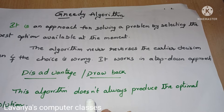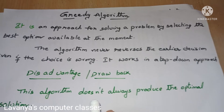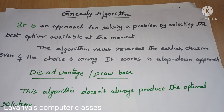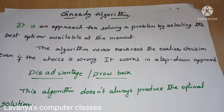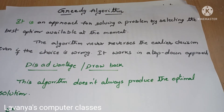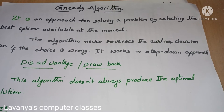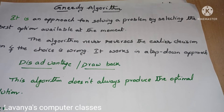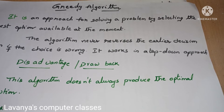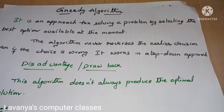Greedy algorithm is an approach for solving a problem by selecting the best optimal solution at that moment. That means in greedy algorithm, first you find out so many solutions, and among these solutions you pick whichever is the best optimal solution at that moment. But we are not saying that whatever choice we selected is guaranteed to be the best one overall. At that moment we are selecting something that feels best — but only for that moment.